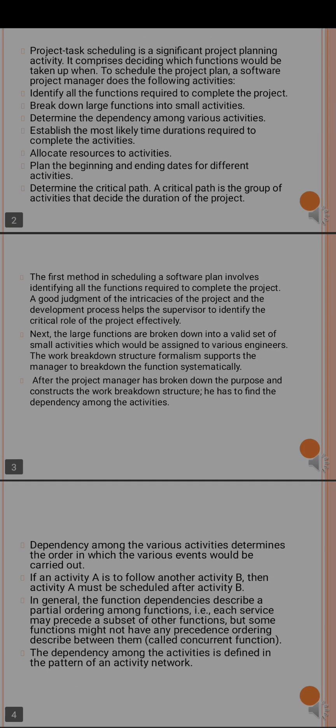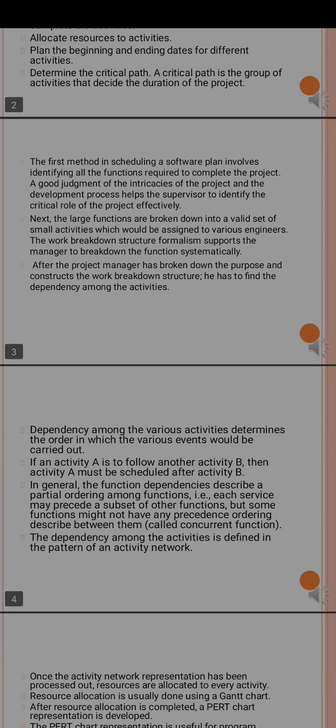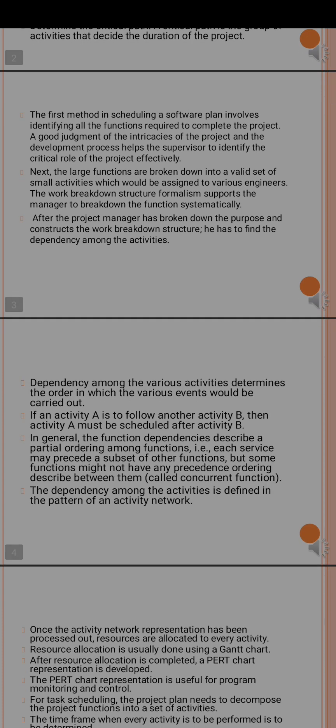The different activities determine the order in which various events are carried out — which events should be carried out. For example, suppose we follow activity A first, then we go to activity B. Generally, the dependencies define a partial ordering of activities.